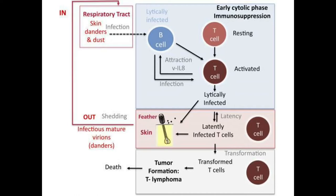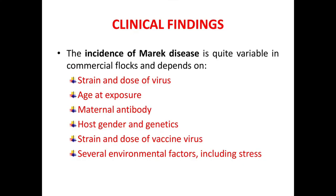So this virus enters through the respiratory tract or skin via dander and dust. First it infects the B cell, then the T cell. In the second phase — latency — latently infected cells multiply in the feather follicle. Some cells get transformed, leading to transformed T cells, T lymphoma, tumor formation, and death, with infectious virions shed via dander.